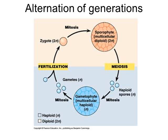Here's a diagram that we saw the other day in class. It's the pattern of plant reproduction — plant life cycles — called alternation of generations. What we mean by this is plants will alternate between a haploid and a diploid stage in their life.